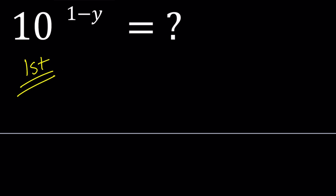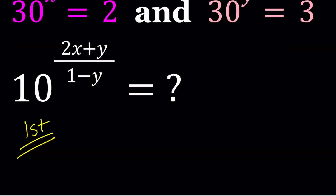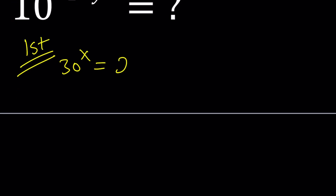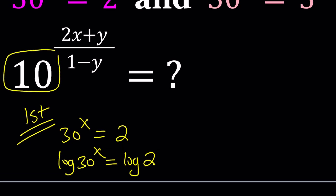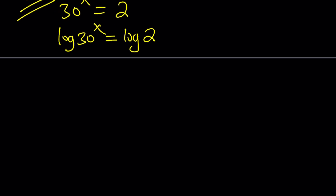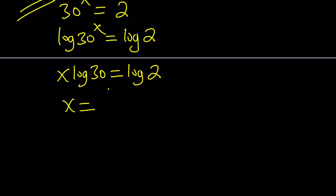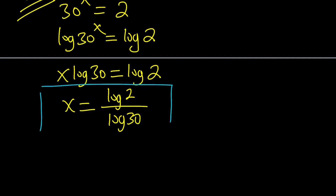For my first method, I'm going to set 30 to the power x equal to 2. From here, I'm going to log both sides. My goal is to solve for x, so let's log both sides with base 10. Base 10 makes sense because our base is 10 here. Bringing the x to the front, you get x to be log 2 divided by log 30. That's the value of x numerically.